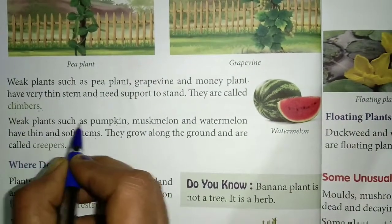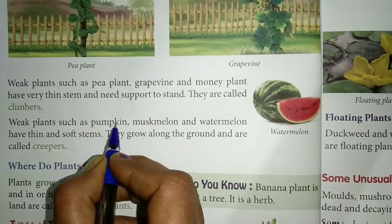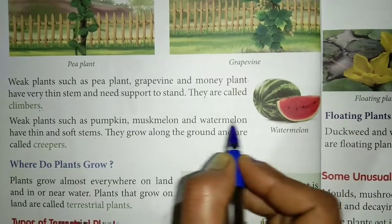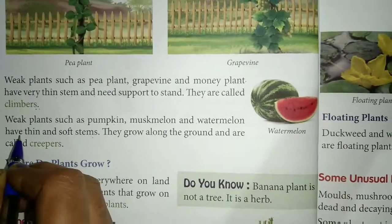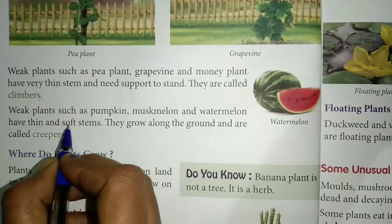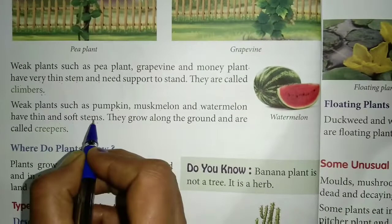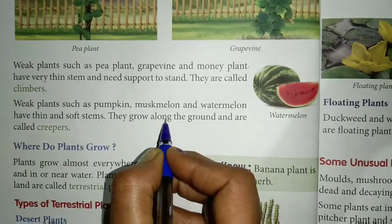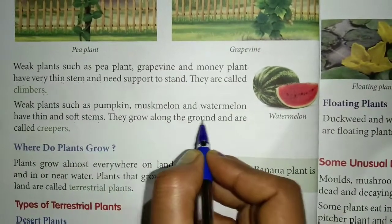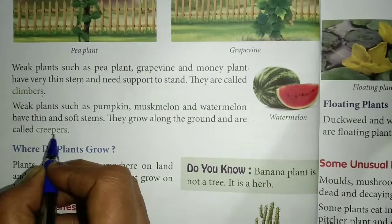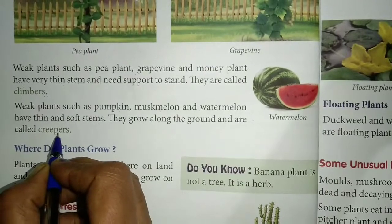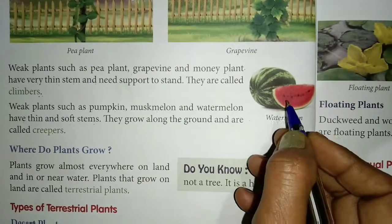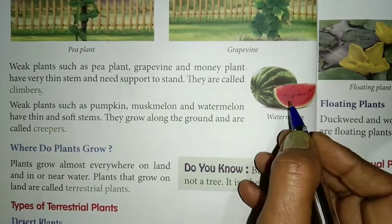Weak plants such as pumpkin, muskmelon and watermelon have thin and soft stem. They grow along the ground and are called creepers. Look at this picture — watermelon.